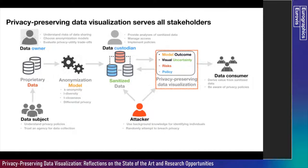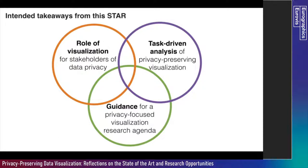For data owners and data custodians, visualization can help in understanding the outcomes of privacy preserving data algorithms, introduce additional uncertainty to the visualization process, or help understand the risk-benefit trade-offs. More recently, we have seen some approaches using visualization for understanding privacy policies. Through this state-of-the-art report, we will bring together knowledge hidden in papers published in both visualization-specific venues and application venues like social science, healthcare, privacy and security — and provide a task-driven analysis mapping those roles, problems, and solutions, concluding with guidance for emerging research areas.